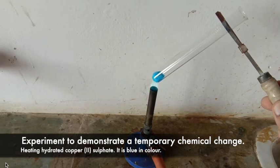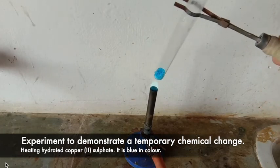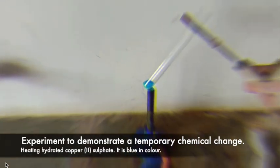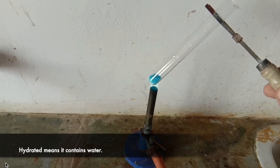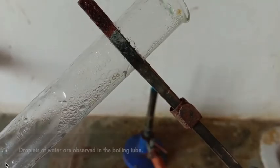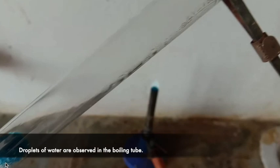Let's carry out a simple experiment to demonstrate a temporary chemical change. We will heat hydrated copper sulfate. It is blue in color. Hydrated means that it contains water. Droplets of water are observed in the cooler parts of the boiling tube.